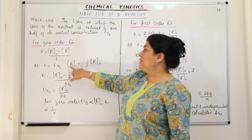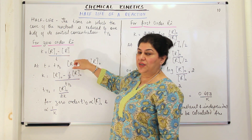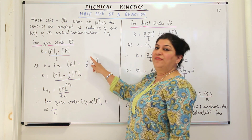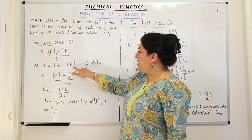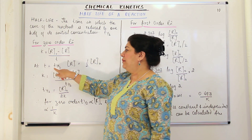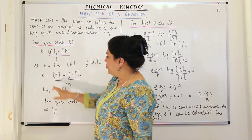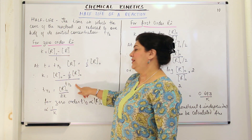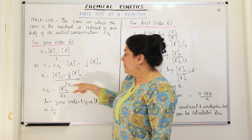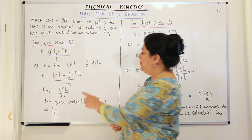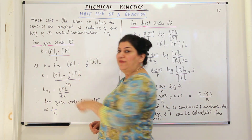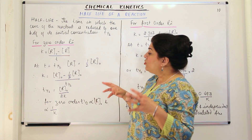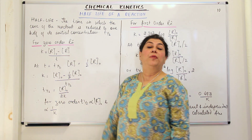At that time, the concentration of R — the final concentration of the reactant — would be half of the initial concentration, so R equals R0/2 and T equals T½. Substituting these values, K becomes equal to R0 minus R0/2 divided by T½. Simplifying: R0 minus half R0 is half R0, so T½ equals R0 upon 2K.